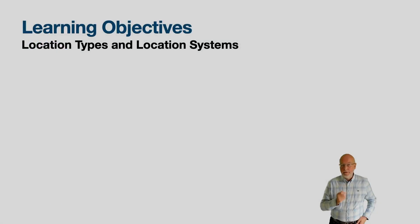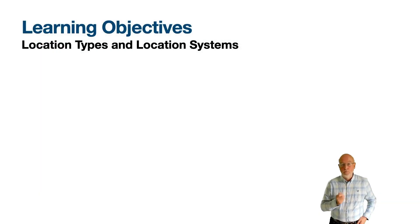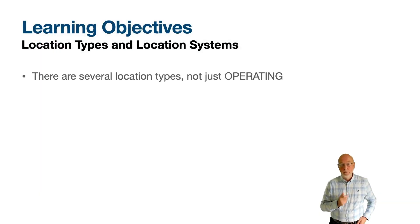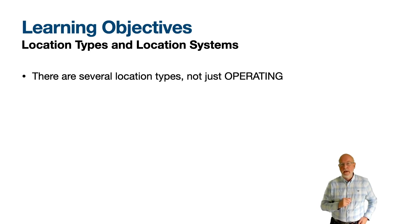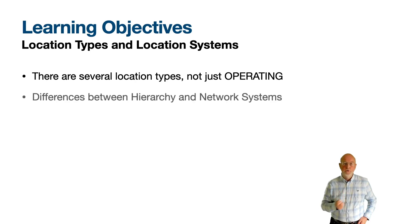We'll be discussing the different location types in Maximo. You will probably be using operating, but there are a few others. It is operating locations that can be added to location systems, and we have two types — hierarchical and network — to explain.